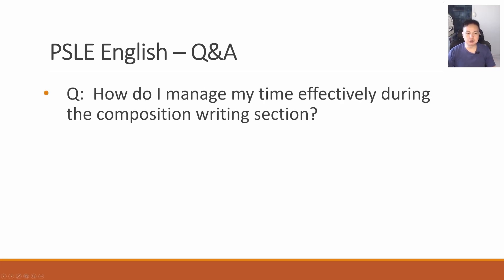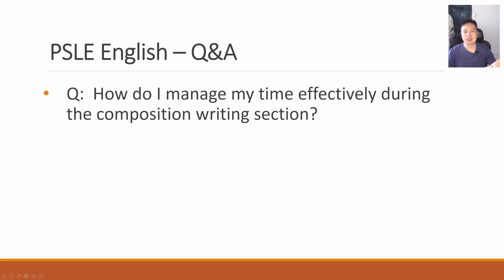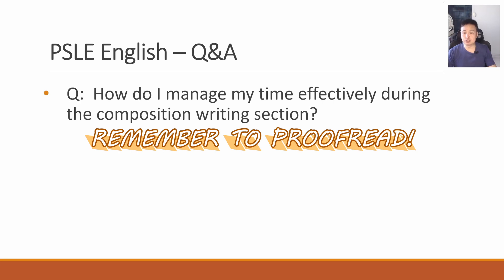How do I manage my time effectively during the composition writing section? You don't want to write an overly lengthy composition. Make sure you are well-rehearsed. The recommended length is somewhere between 300 to 350 words — that's the sweet spot. Do not spend too much time brainstorming, maybe about five to ten minutes maximum, then start writing. Make sure you conclude the composition and leave yourself about five to ten minutes for proofreading and checking.